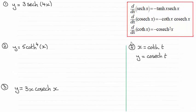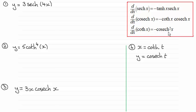Hi there. In this video I want to give you the results for differentiating the hyperbolic functions sech x, cosech x and coth x. As you can see, the differential of sech x is minus tanh x sech x. The differential of cosech x is minus coth x cosech x, and the differential of coth x is minus cosech squared x. I'm giving you these results without proof, but if you want to see these, check out the videos later on in this series.